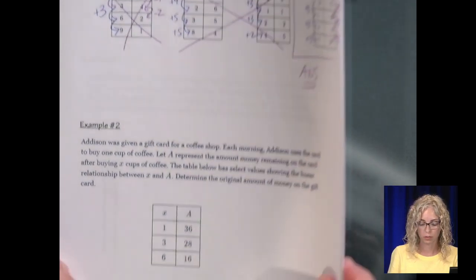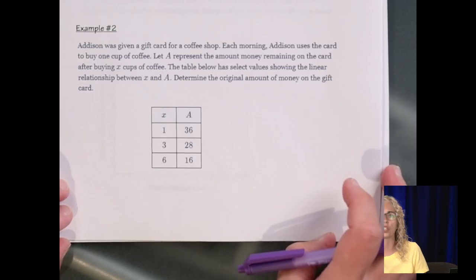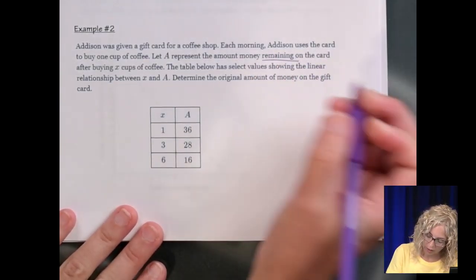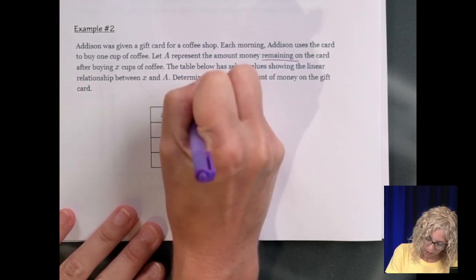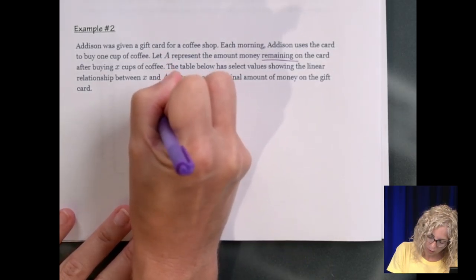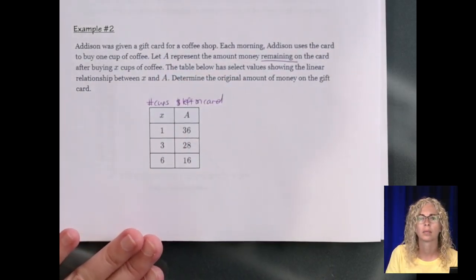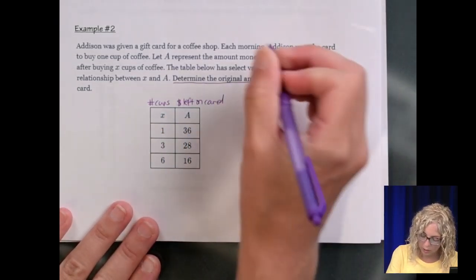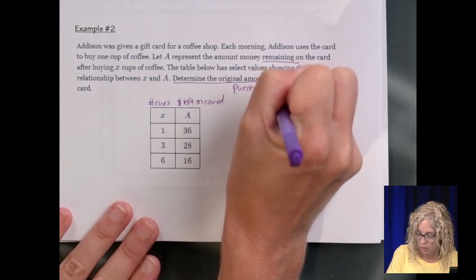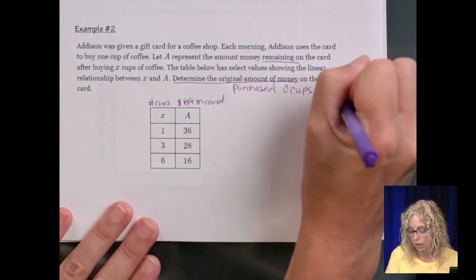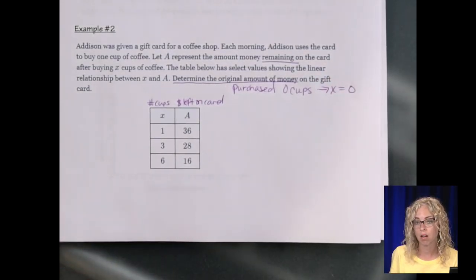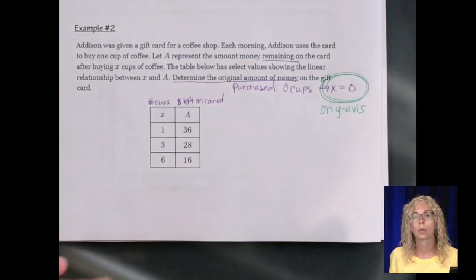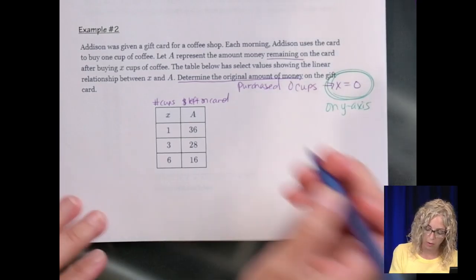Example number 2. Addison was given a gift card for a coffee shop. Each morning, she uses the card to buy one cup of coffee. A represents the amount of money left on card, where x is the number of cups of coffee. Determine the original amount of money on the gift card. Well, the original amount of money means we purchased 0 cups. Or rather, the x is 0. And any time x is 0, that means we're on the y-axis. So what we need to find is the y-intercept.